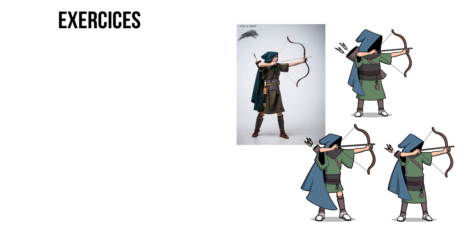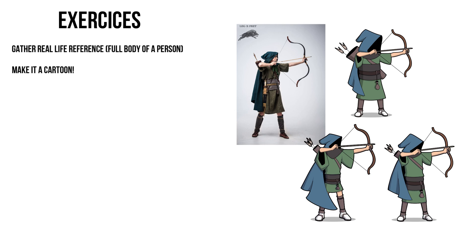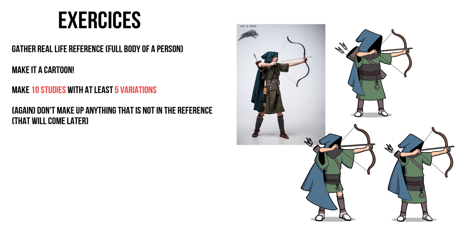For the exercises, I think you know what it's gonna be. Just gather a suitable real life reference — a full body of a character — and adapt it to a cartoon. Do at least 10 studies with at least 5 variations each. If you want you can invent new things to supply any fault you see in the adaptation, that's fine, but usually I don't recommend you to just invent stuff, at least for now. If the end result looks empty, just accept it — and in the next lesson I'll show you how to fix that.